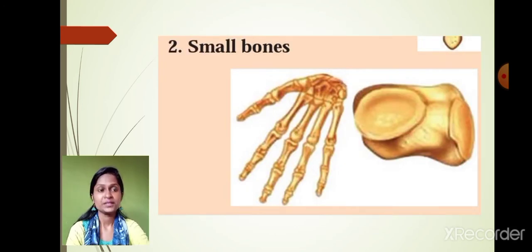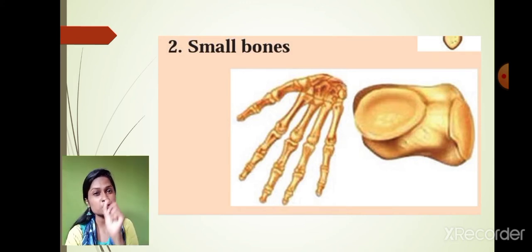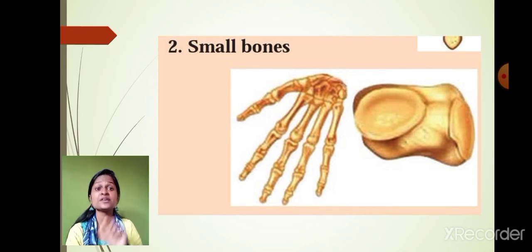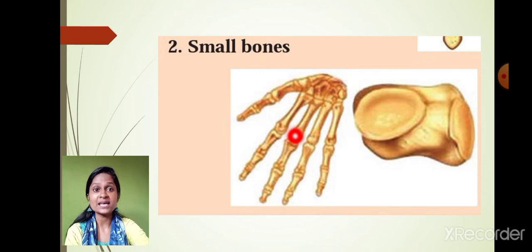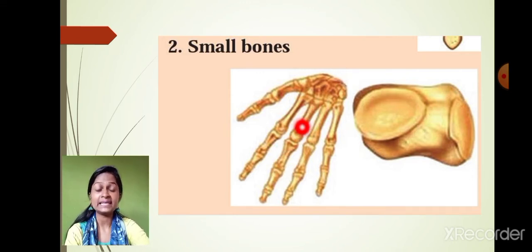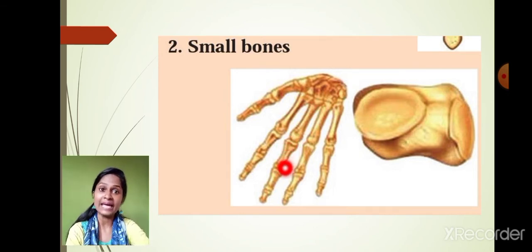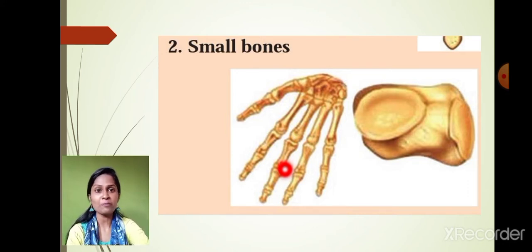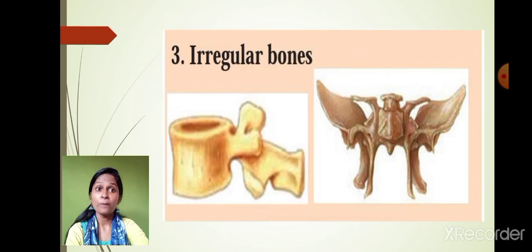The small bones are bones which are smaller in size. Many small bones are attached together, forming the shape of our fingers. These small bones are present in the fingers of our hands and also in the toes of our feet.